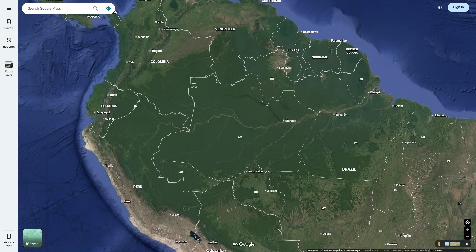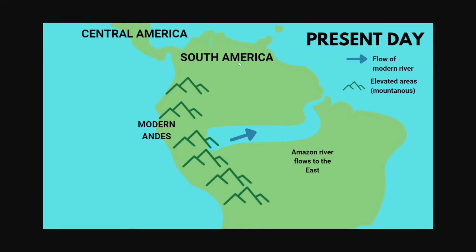Around five to two million years ago, the Pebas Wetlands actually drained to the north because of lowered sea levels due to a major glacial period in the northern hemisphere. Also around this period, the Amazon River was able to break through the Purus Arch, because it had significantly eroded away at that point. This has finally led the Amazon River to flowing from the Andes to the Atlantic Ocean that we see today.